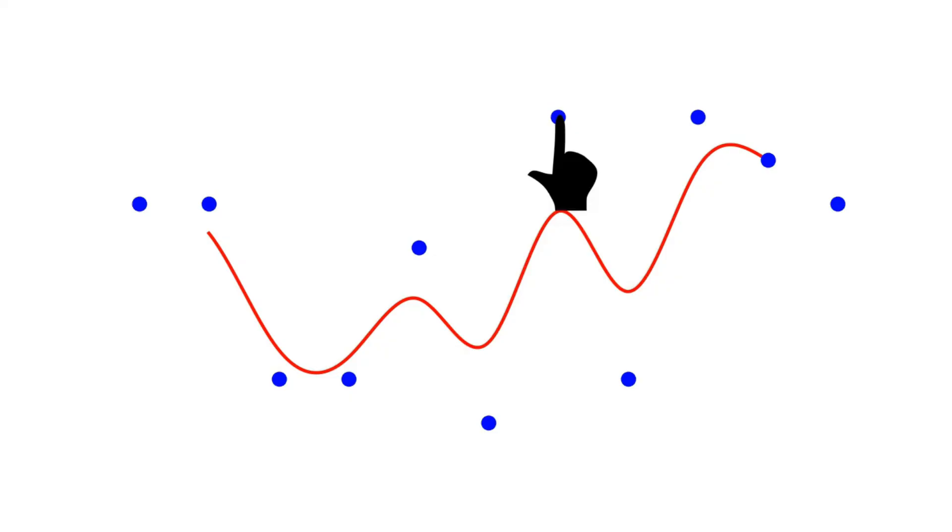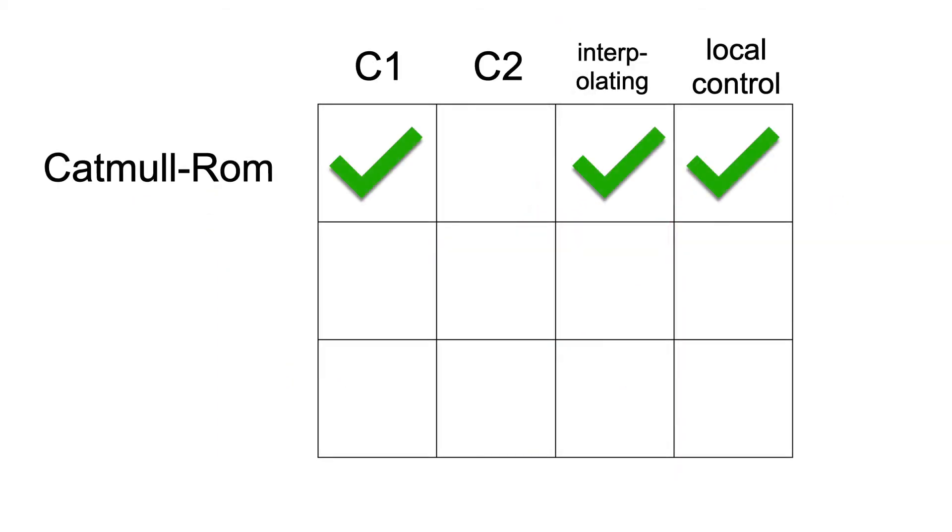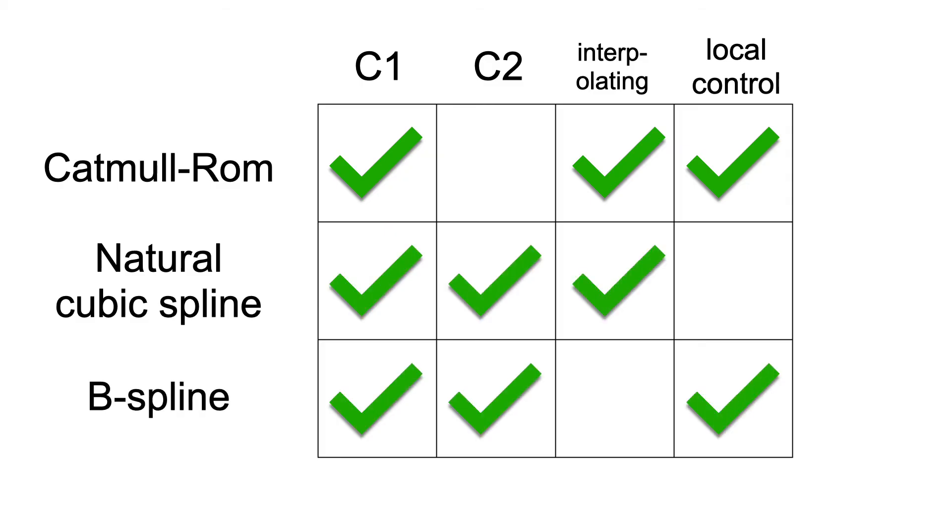B splines are cool because they're both C2 and have local control. When I drag this control point, only one part of the spline moves. Great. So we've covered three types of splines which have different features depending on what you want.